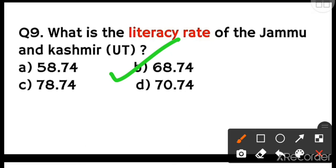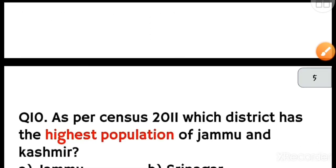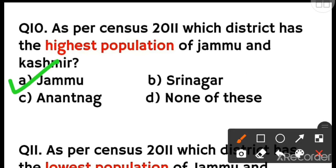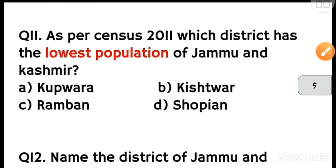As per census 2011, which district has the highest population in Jammu and Kashmir? The options are Jammu, Srinagar, Anantanag, and none of these. Jammu is the most populous district of Jammu and Kashmir as per census 2011. Option A is the correct answer.